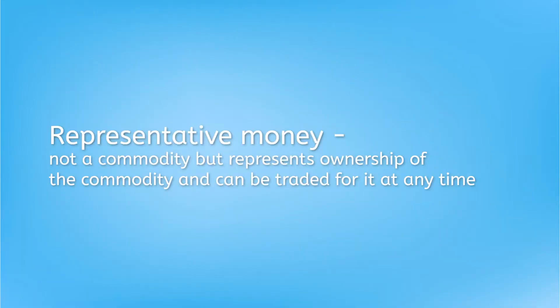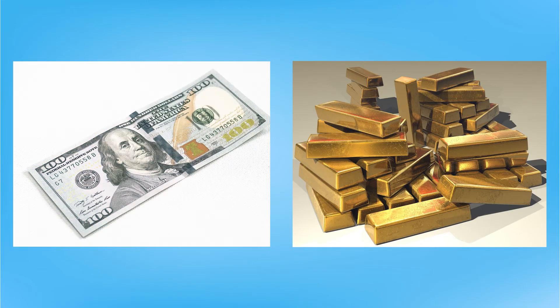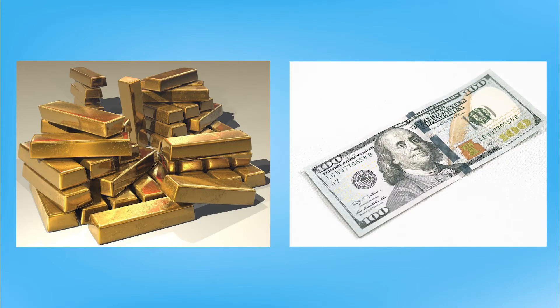Later on, some civilizations began using representative money — money that isn't a commodity itself, but represents ownership of the commodity and can be traded for it at any time. At one point, all money in the United States represented real-life gold. That hundred dollar bill in your pocket meant the government was holding onto a hundred dollars worth of gold for you, and you could trade it in or give it to somebody else if you wanted.